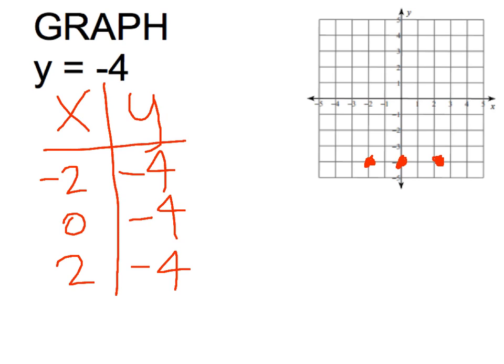As I stated in my other example, you're going to grab your ruler right now and you're going to draw or connect these points with a straight line. Label your line, y equals negative 4.